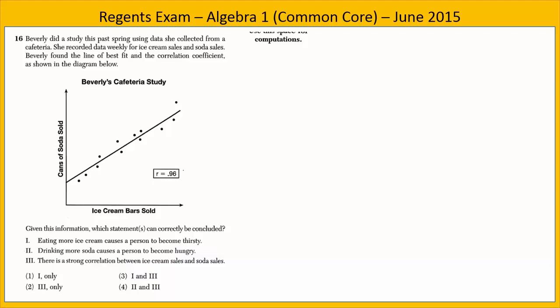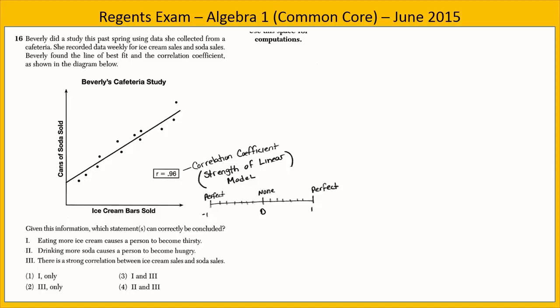In Problem 16, Beverly collected cafeteria data on weekly ice cream and soda sales, performed a linear regression, and found a correlation coefficient. The correlation coefficient ranges from negative 1 to positive 1 — negative 1 is a perfect negative fit, positive 1 is a perfect positive fit, and 0 means no correlation. Choice 1 says eating more ice cream causes a person to become thirsty. However, correlation does not suggest causation — it only shows a linear relationship, so choice 1 is out.